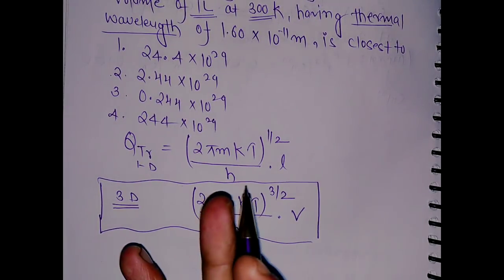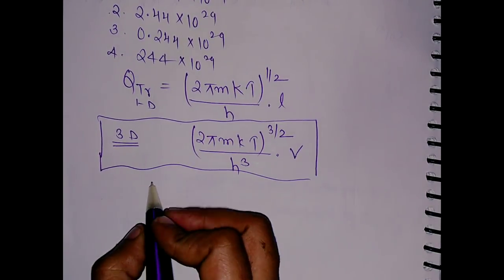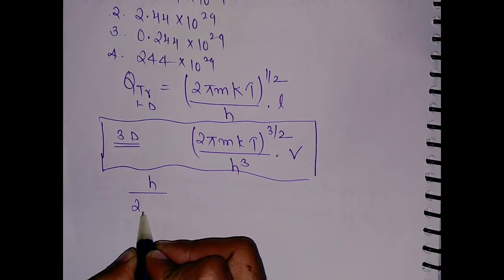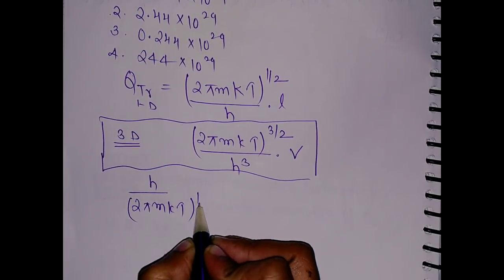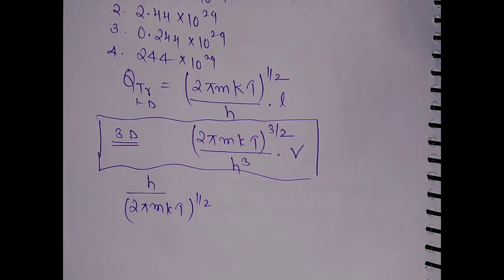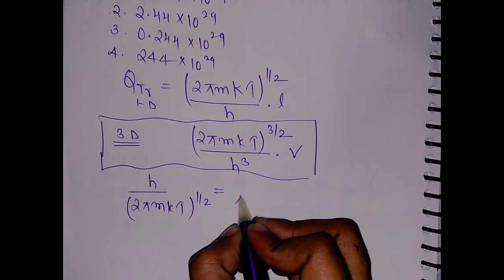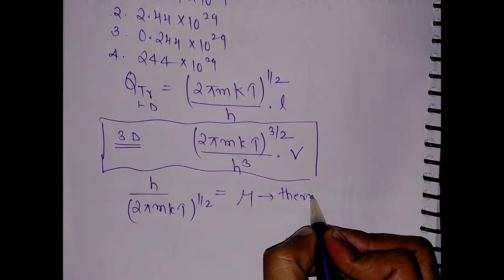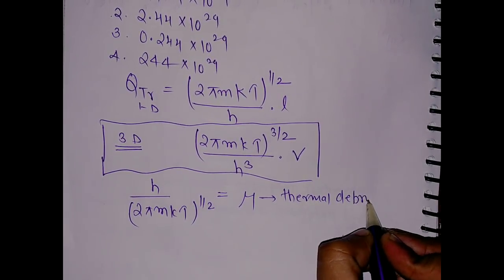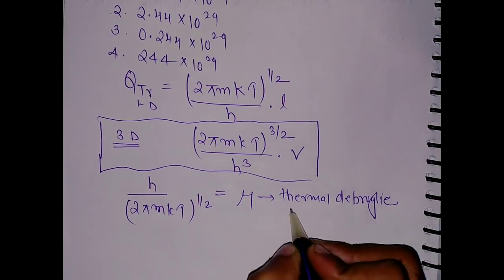Now one important thing to remember is h/(2πmkt)^(1/2) - it is known as thermal de Broglie wavelength.